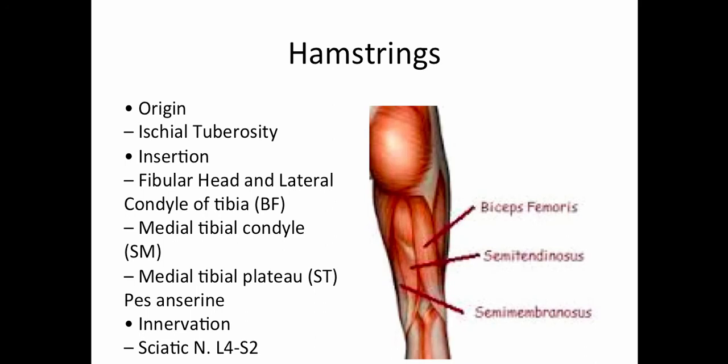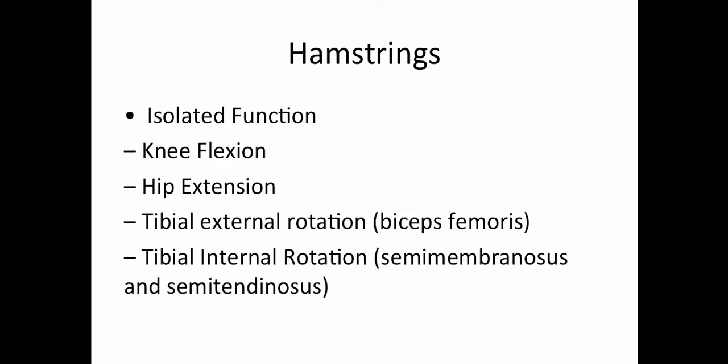The hamstrings all originate on the ischial tuberosity, but the three insert in different areas. The biceps femoris inserts on the fibular head and lateral condyle of the tibia. The semimembranosus inserts on the medial tibial condyle, while the semitendinosus inserts in the pes anserine, located on the medial tibial plateau. The isolated function of the hamstring muscles is knee flexion and hip extension. They also produce tibial external rotation — that's the biceps femoris — and tibial internal rotation — that's the semimembranosus and the semitendinosus.